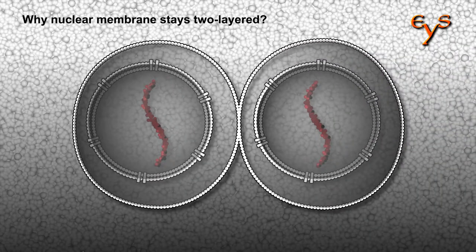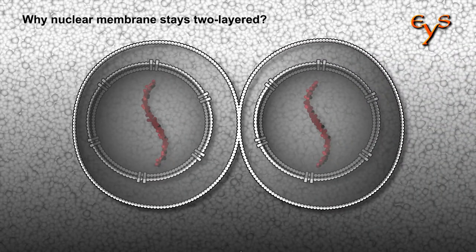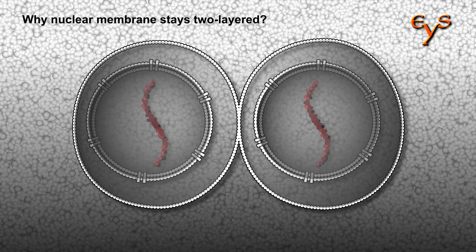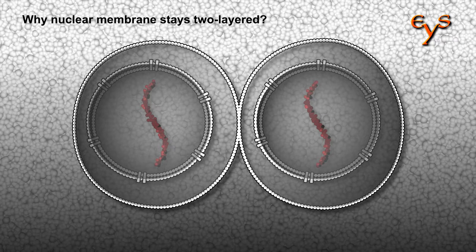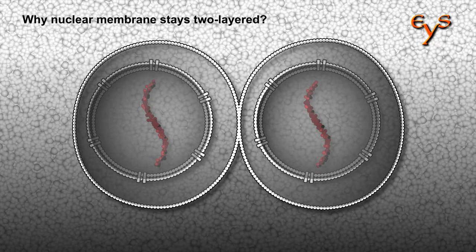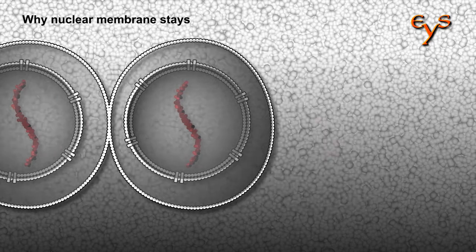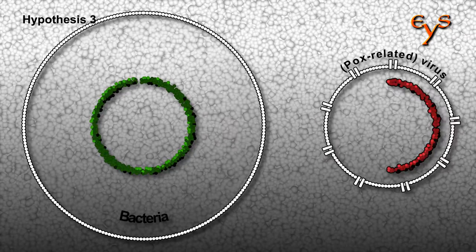Archean cell is a candidate nucleus ancestor due to the similarity of nuclear proteins, including those of nuclear pores, as well as histone proteins instrumental for DNA packaging, with known proteins in Archaea. The third hypothesis suggests a virus in place of an Archaea.